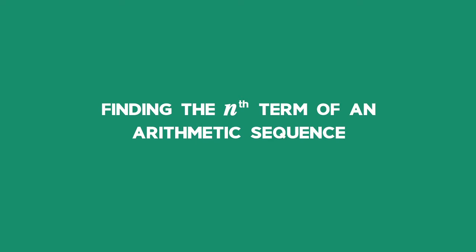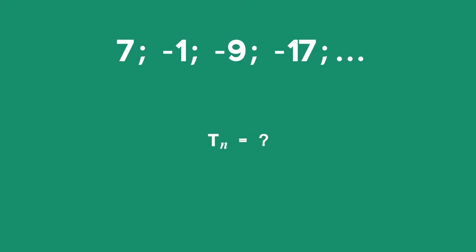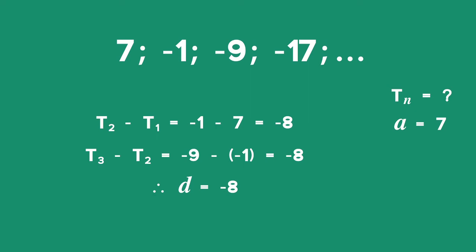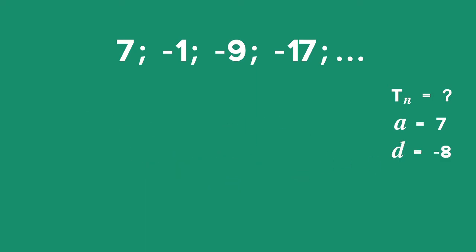Example 2: Finding the nth term of an Arithmetic Sequence. Find the general term of the sequence 7, negative 1, negative 9, negative 17, and so on. Solution: A is equal to 7. Term 2 minus term 1 is equal to negative 1 minus 7, which is negative 8. Term 3 minus term 2 is equal to negative 9 minus negative 1, which is negative 8. Therefore this sequence is arithmetic and D is equal to negative 8. The formula for the general term is given by TN equals A plus (N minus 1) multiplied by D.